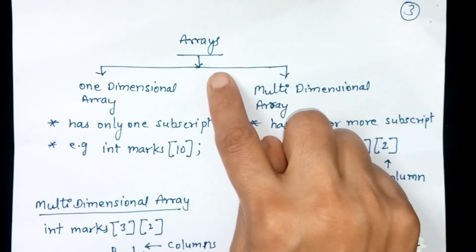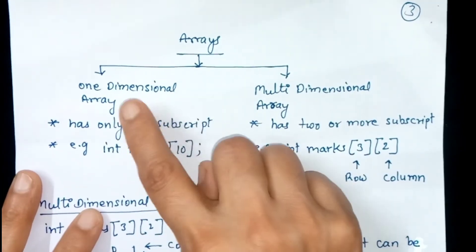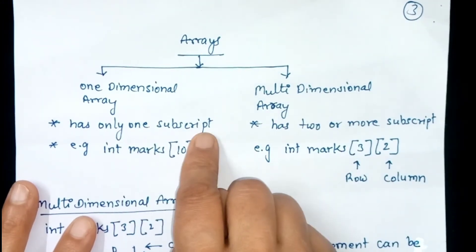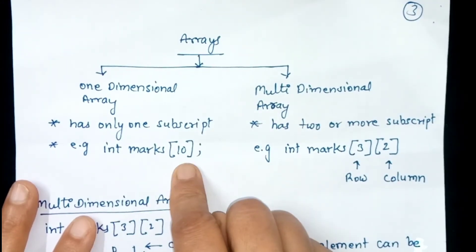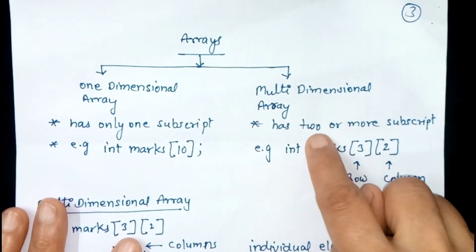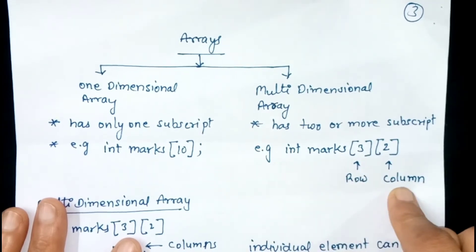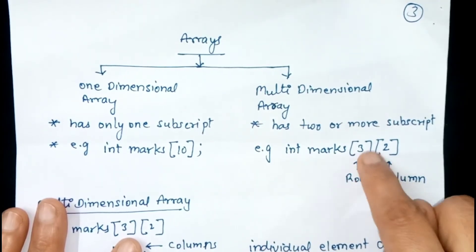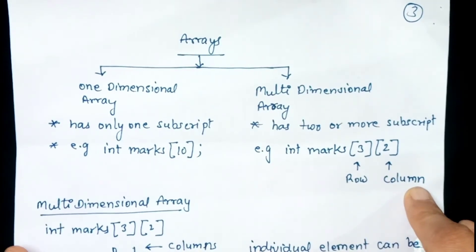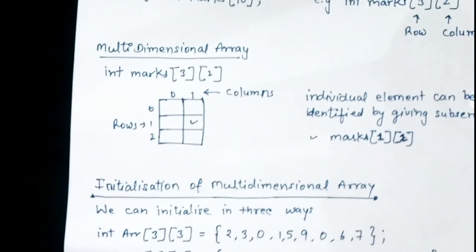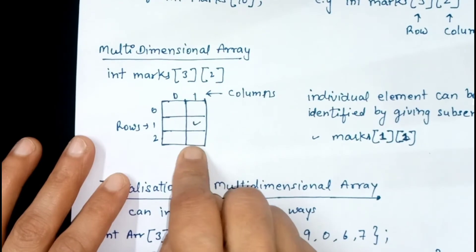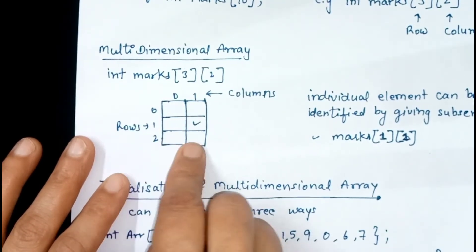Now we will see the types of arrays. There are two types: one dimensional array and multi-dimensional array. In the case of a one dimensional array, it has only one subscript. In the case of a two dimensional array, there are two subscripts. The first square bracket shows the rows and the second square bracket shows the columns of the array. We can represent this as a matrix — this is a two dimensional array where rows and columns are shown.